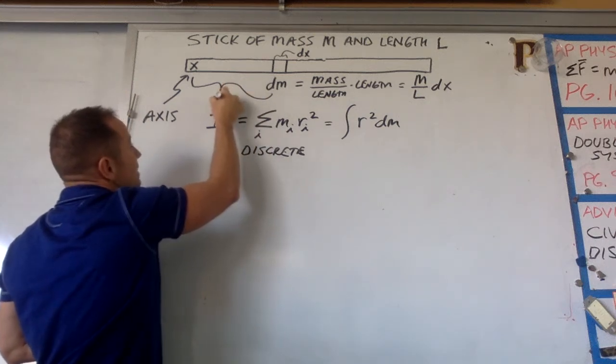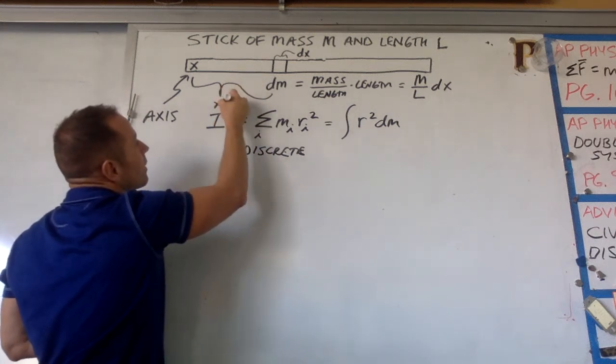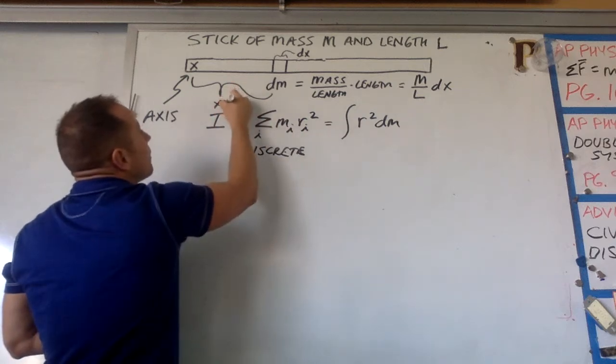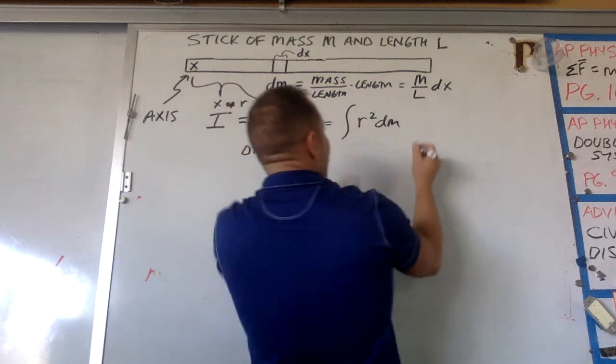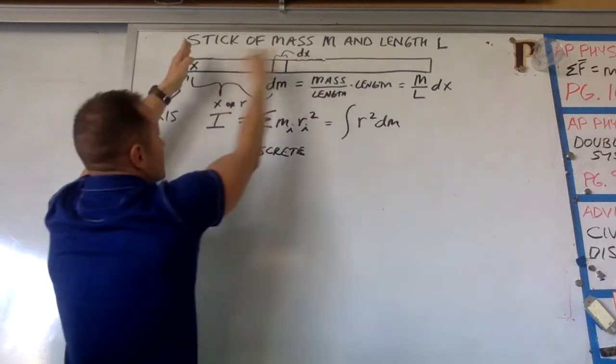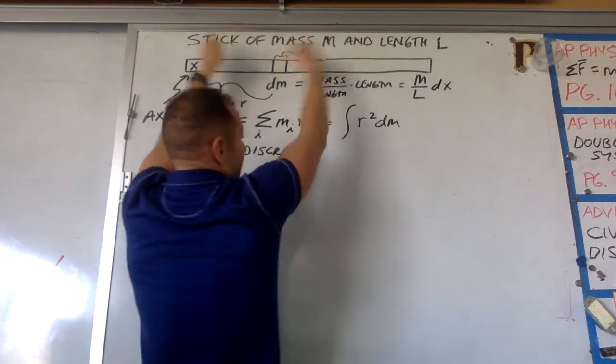So this distance would be x or r. And so what's going to happen is really this r we can write as x. It's just the distance away from the axis.